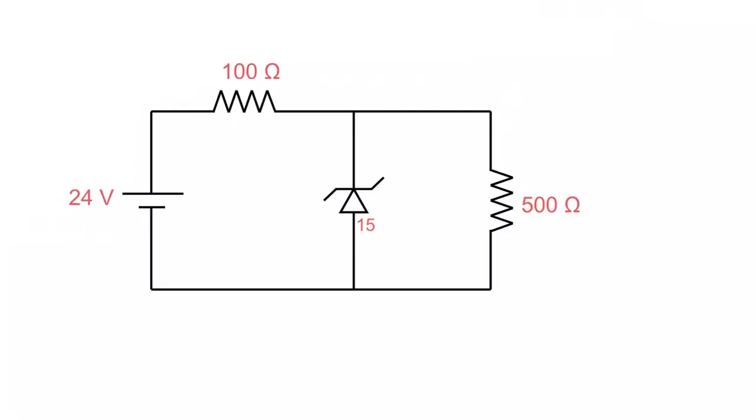So in this case I've got a 24 volt source, I've got a 100 ohm current limiting resistor there, I've got a 500 ohm load, and I've got a Zener that has a breakthrough voltage of 15 volts.